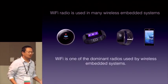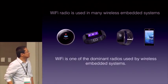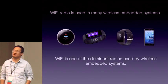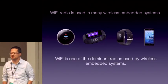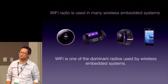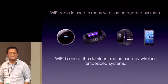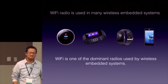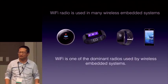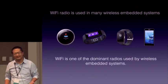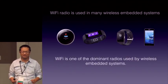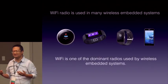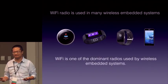We have put Wi-Fi radios in many embedded systems like the thermostat sensor, the wristband, the smartwatch, and the smartphone. Wi-Fi has become one of the dominant radios that we use for connecting to the internet.